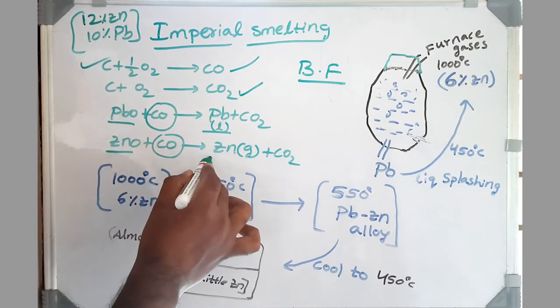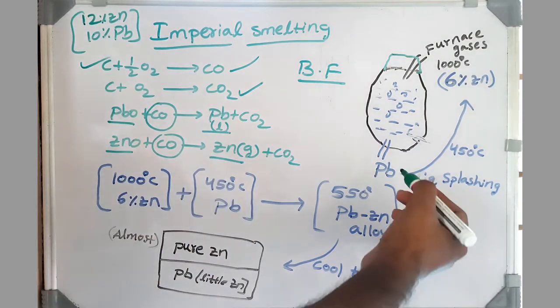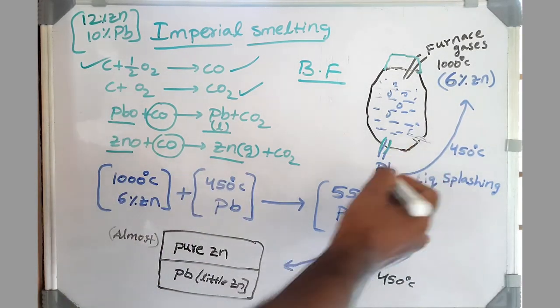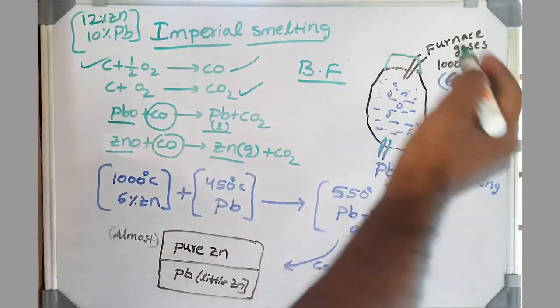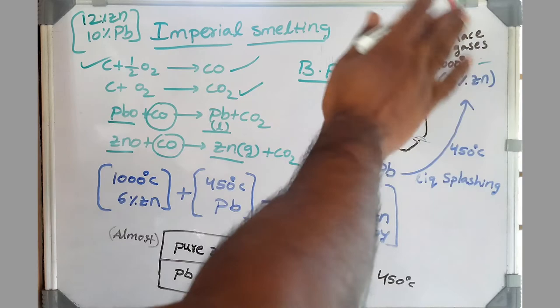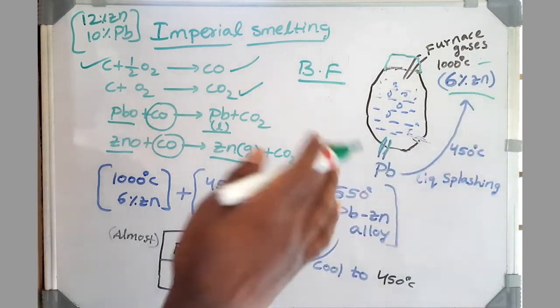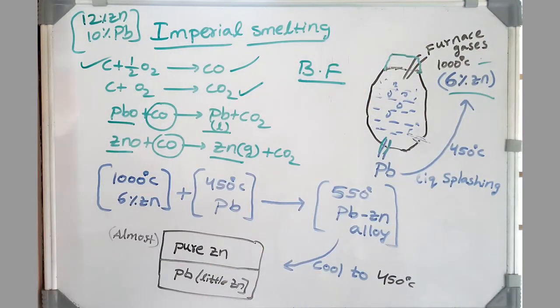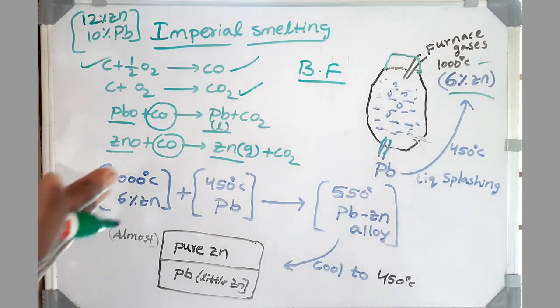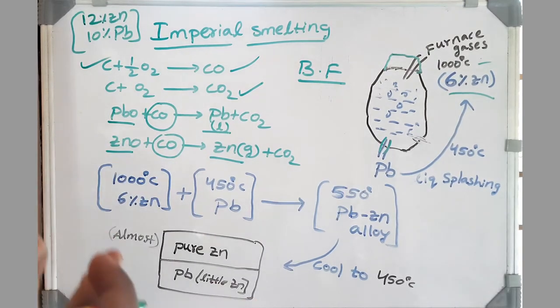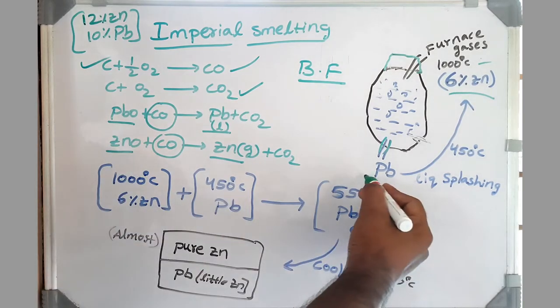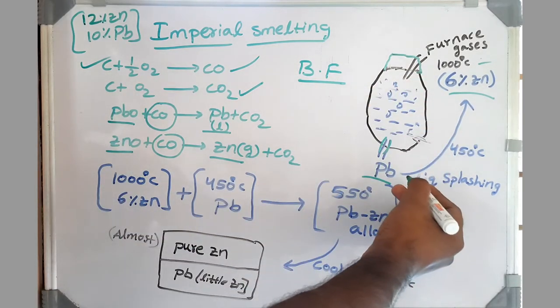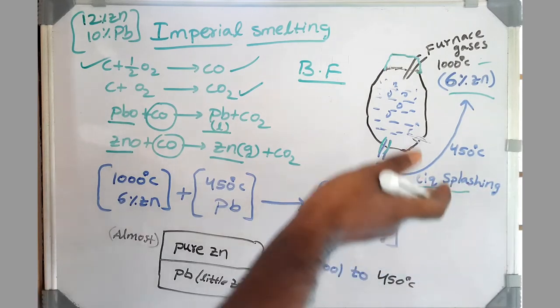Since lead is liquid we collect through the tap hole, and zinc as a vapor comes along with the furnace gases at thousand degrees centigrade. The composition of furnace gases is 6 percentage zinc along with carbon monoxide and carbon dioxide. Now here is the interesting step, friends. To separate zinc which is vapor along with carbon monoxide and carbon dioxide, what we do is take the lead we collect through the tap hole and we splash this liquid lead to the furnace gases.